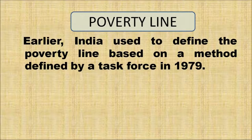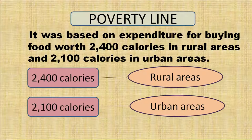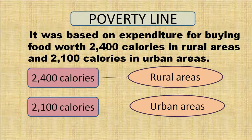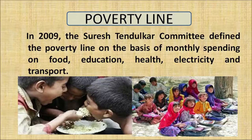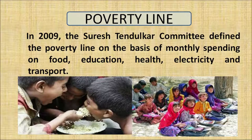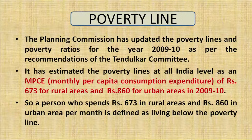Earlier, India used to define the poverty line based on a method defined by the Task Force in 1979. It was based on expenditure for buying food worth 2,400 calories in rural areas and 2,100 calories in urban areas. But in 2009, the Suresh Tendulkar Committee defined the poverty line on the basis of monthly spending on food, education, health, electricity, and transport. The Planning Commission updated the poverty line and poverty ratios as per the recommendations of the Tendulkar Committee.